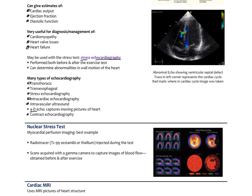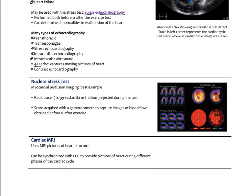The nuclear stress test, although less commonly performed, gives a picture of how well the myocardium is being perfused with blood flow. It typically uses thallium or technetium-99 sestamibi as a contrast agent, injected intravenously. A gamma camera captures images of blood flow obtained before and after exercise. These are short-lived isotopes that undergo their half-life very quickly.